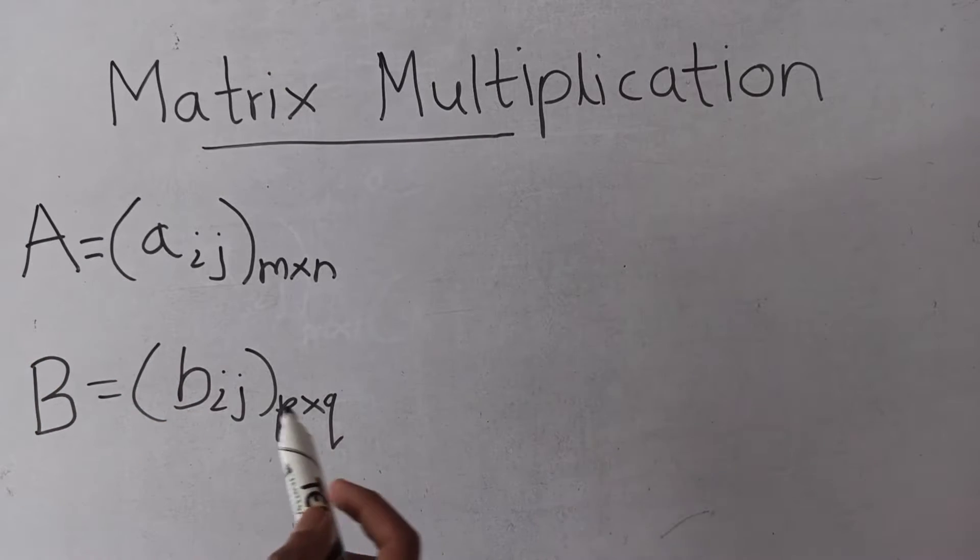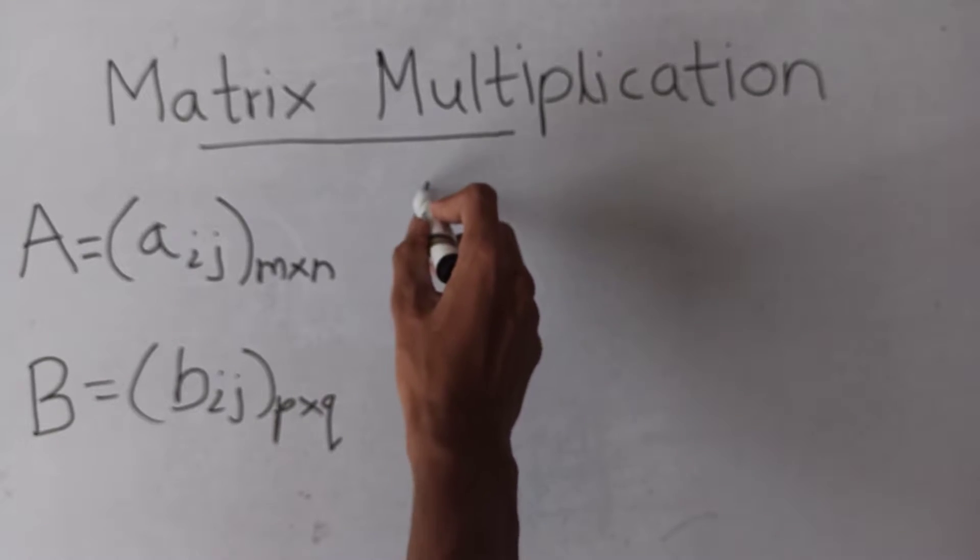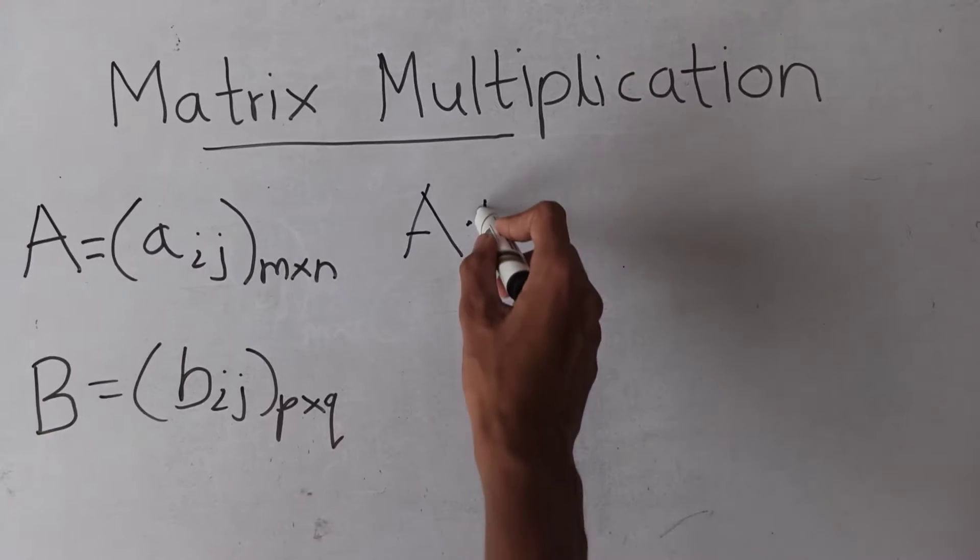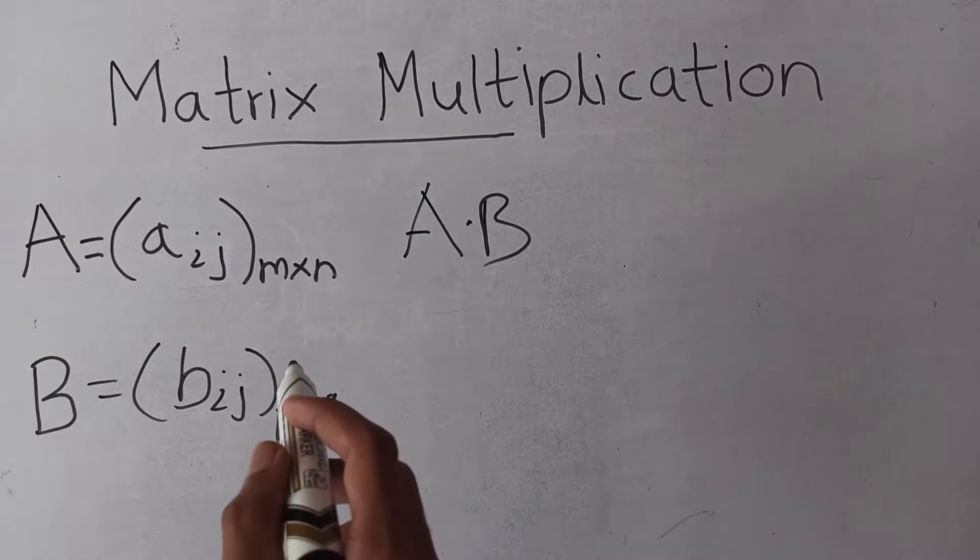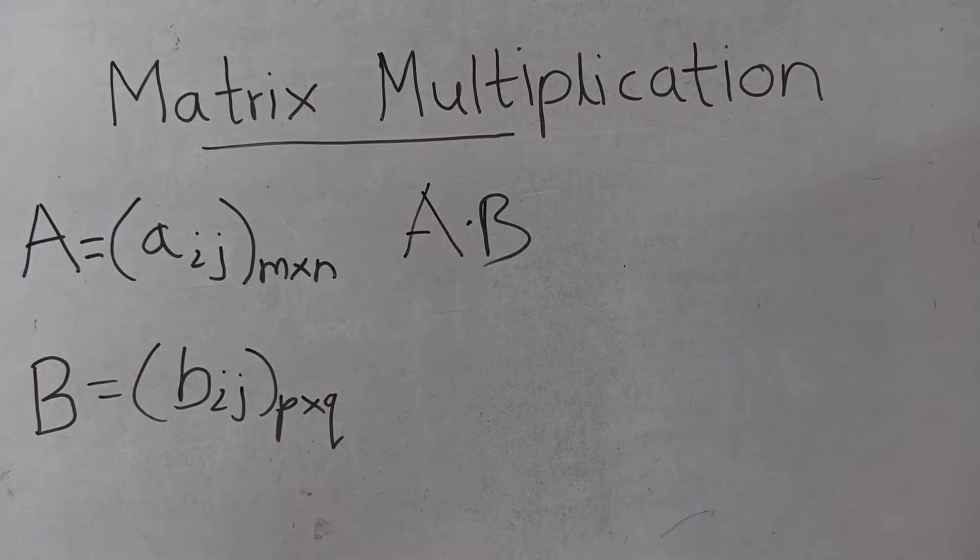These are two matrices. If you want to multiply these, it must be necessary to have n equal to p.